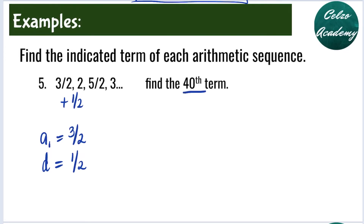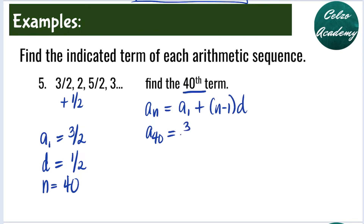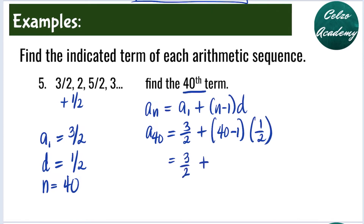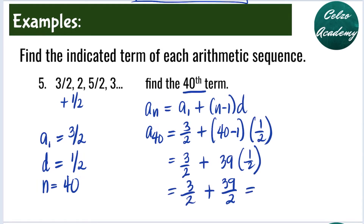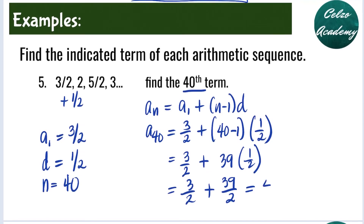We're solving for the nth term where n is 40. Using the arithmetic sequence formula a sub n equals a sub 1 plus n minus 1 times d, we solve for a sub 40. Our a sub 1 is 3 over 2, plus 40 minus 1, times d of 1 half. Simplifying: 3 over 2 plus 39 times 1 half equals 3 over 2 plus 39 over 2. Adding the numerators, 3 plus 39 equals 42, giving us 42 over 2. Therefore, our 40th term is 21.